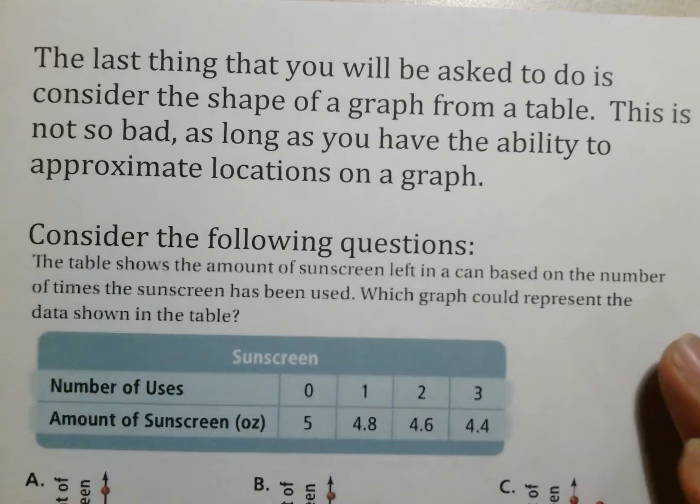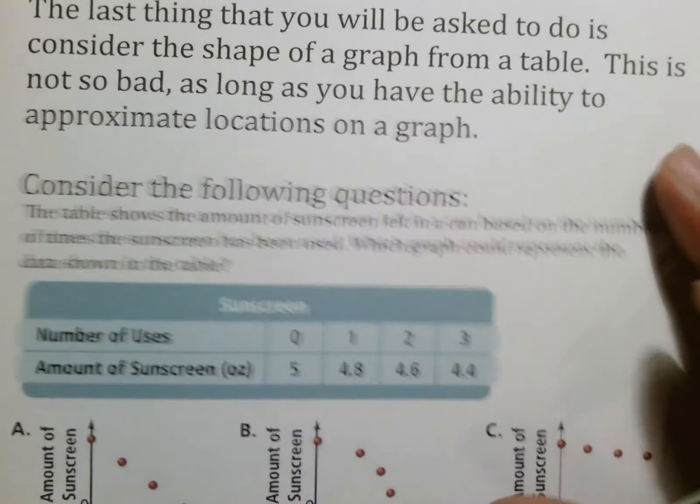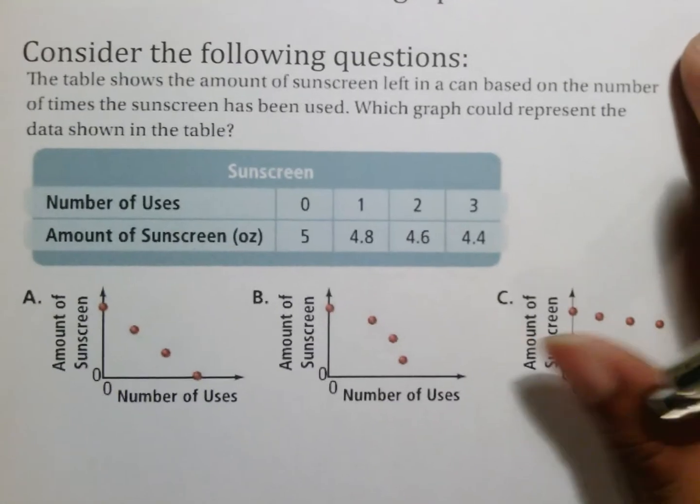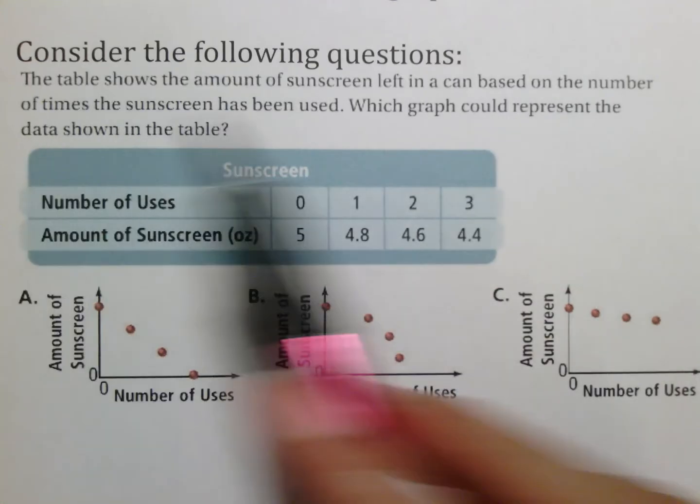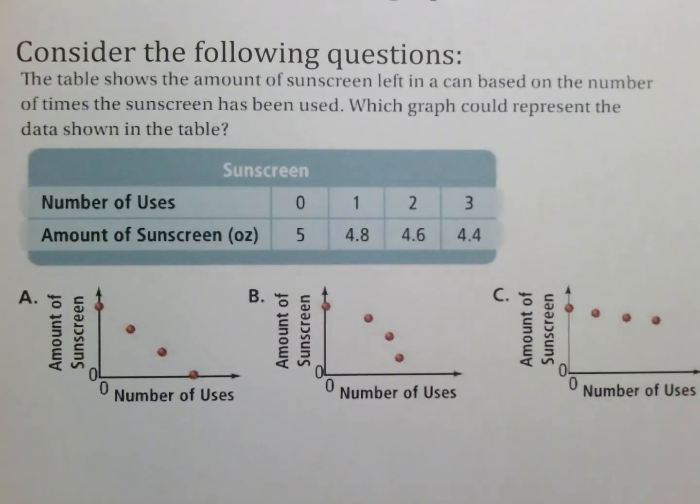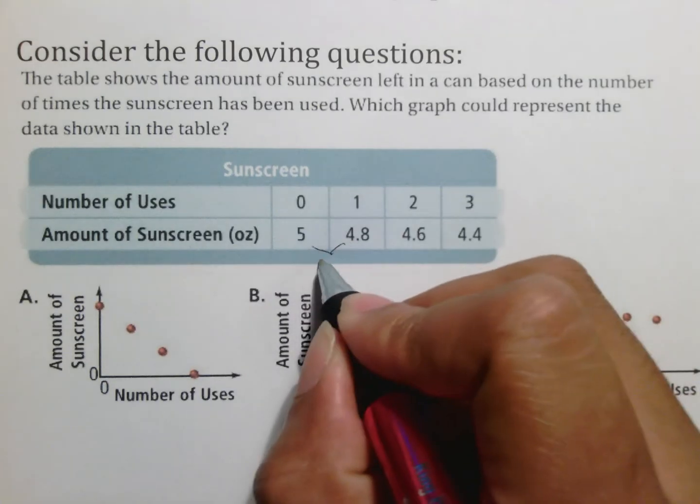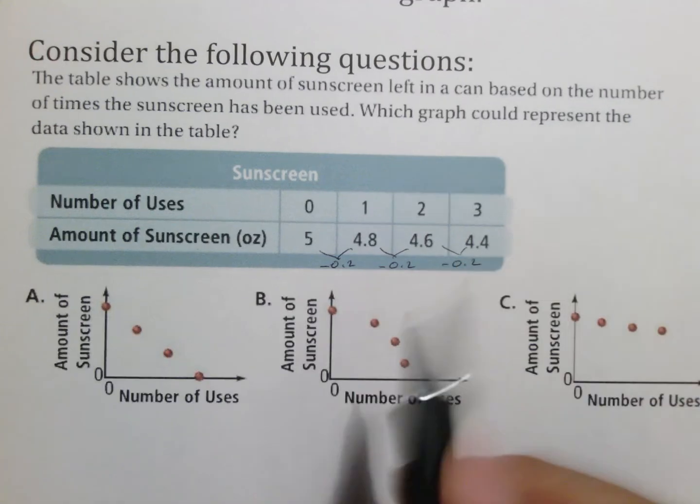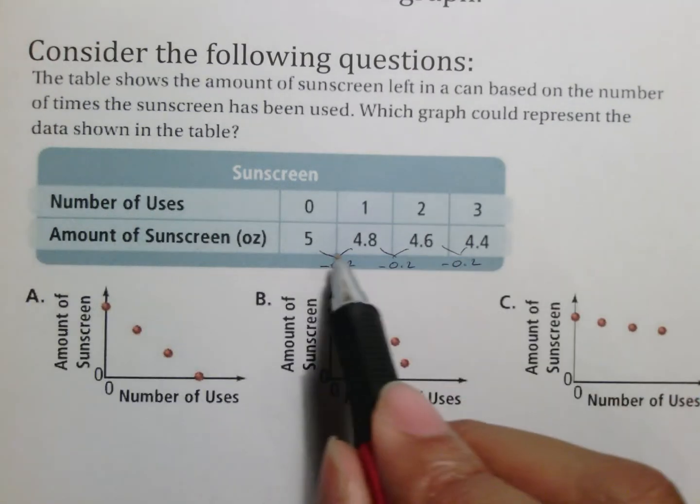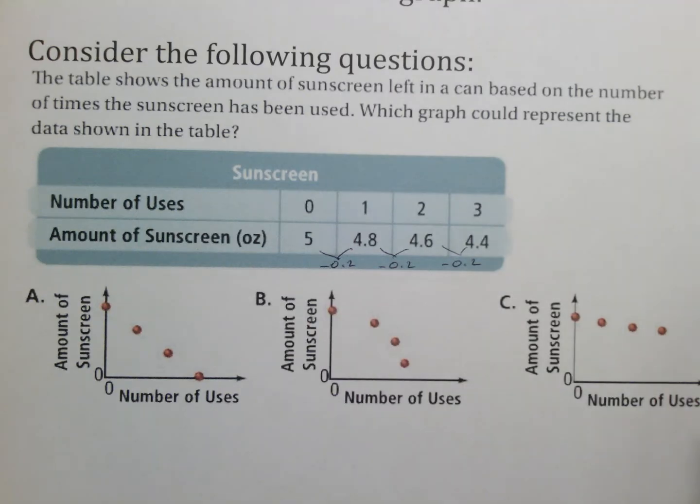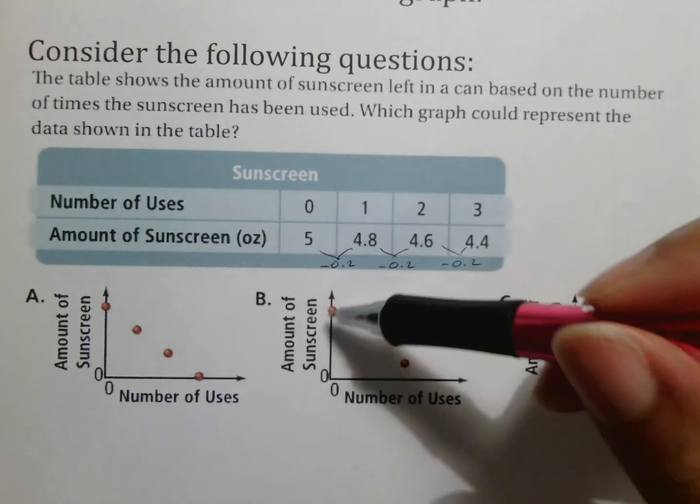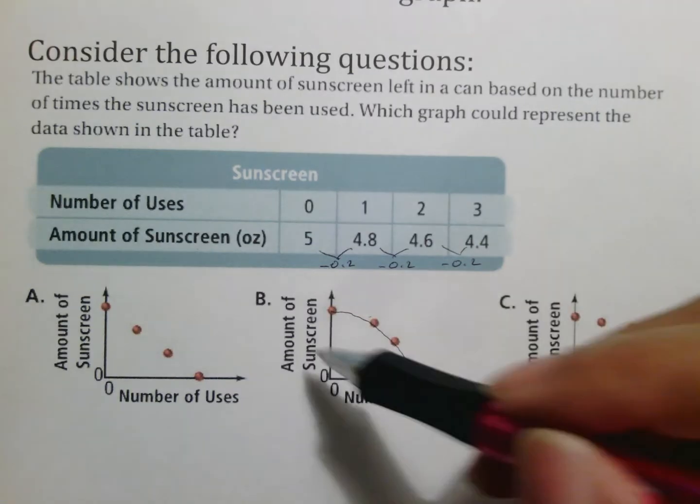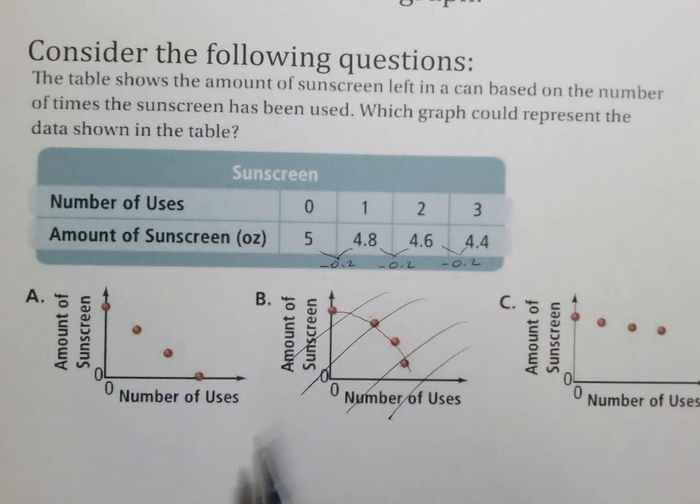The last thing you'll be asked to do is consider the shape of a graph from a table. This is not so bad as long as you have the ability to approximate locations on a graph. One of the things that's going to ask you is going to say the, for example, amount of sunscreen left, based on the number of times it's been used, which graph could represent the data in the table. The first thing you need to kind of analyze is that this is going down 0.2, that this is going down 0.2, that this is going down 0.2. So this is a steady decrease here. It's something that we would call a linear pattern, and we'll learn about that later. But a steady decrease is linear, which means that it should not be this, because notice that if you do that, it curves. That can't be it. Anytime your difference is the same, it's going to be a straight kind of difference there.